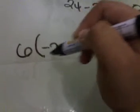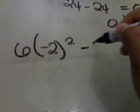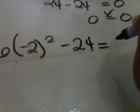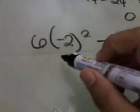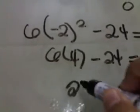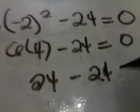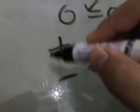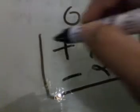Now let's try negative 2: 6 times negative 2 squared minus 24 is equal to 0. Negative 2 can also be an answer. Therefore, both positive and negative 2 are the answers for this equation.